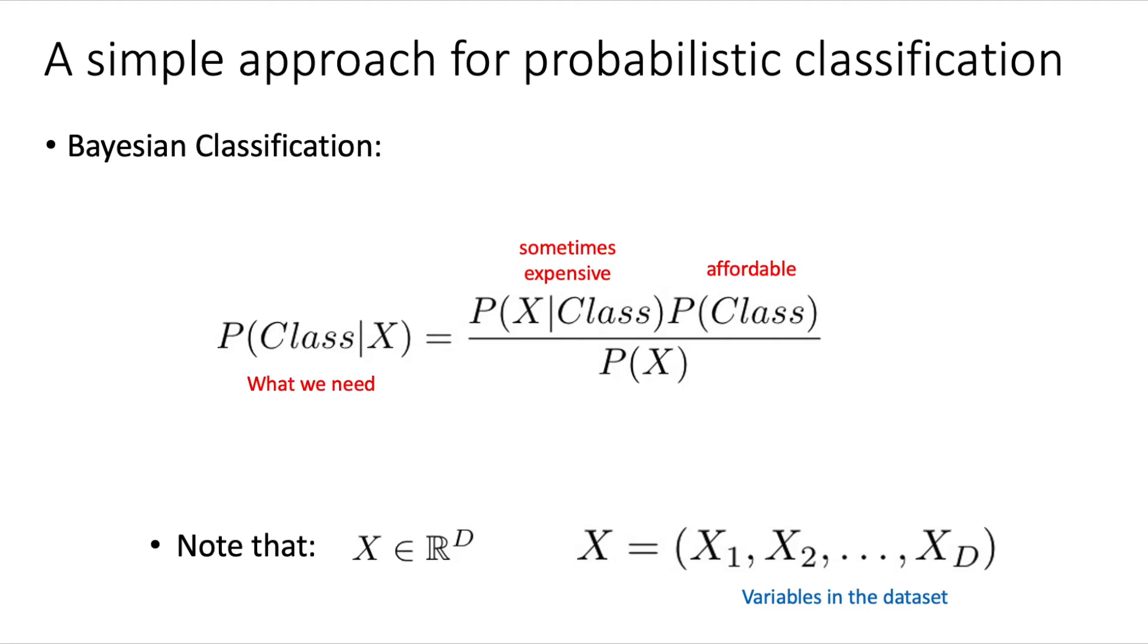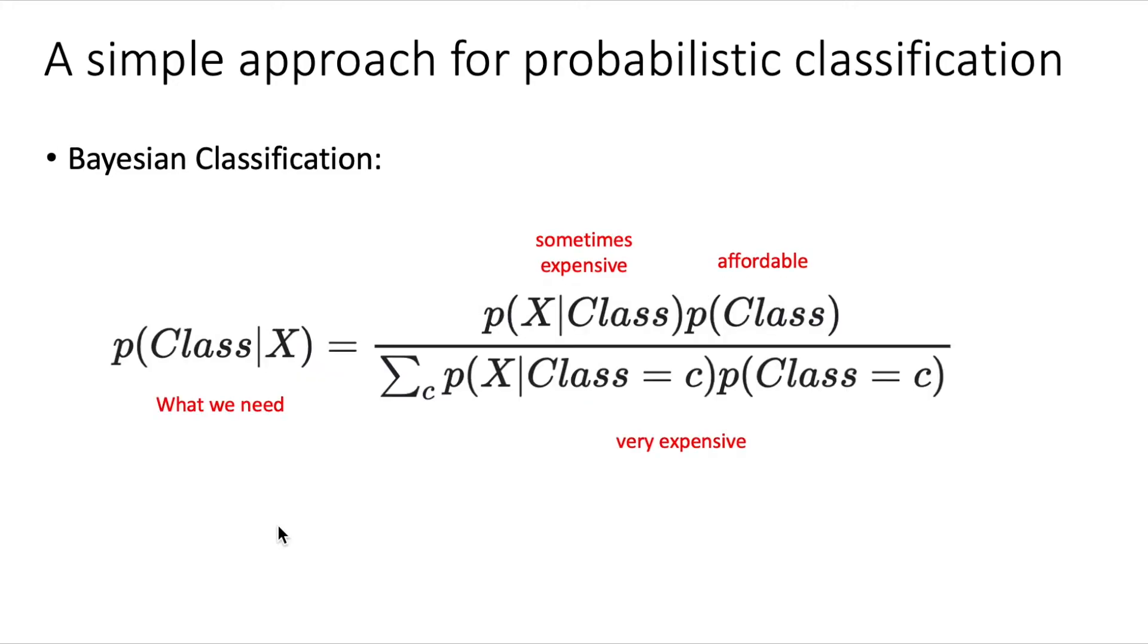This term is in general more affordable because you just need to calculate the prior probability of the class. For example, from the training set, you could just count the amount of elements in each of the class values to have an estimation of the probability of the class a priori. And this term is in general very expensive. Why? Because the way to calculate that term in the denominator is by marginalizing out all the possible values of the class. So you need to condition on the class, multiply by its probability and sum over all the class values. So this term here can get very expensive.